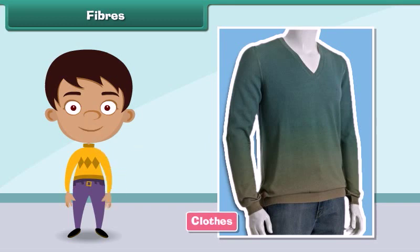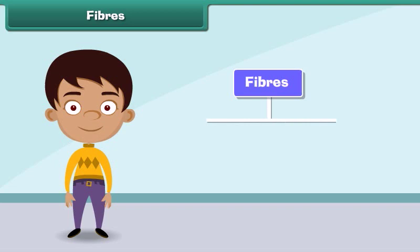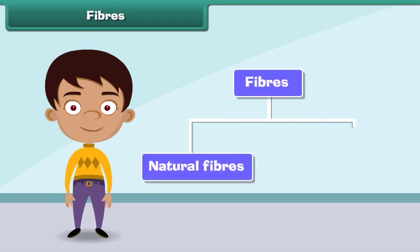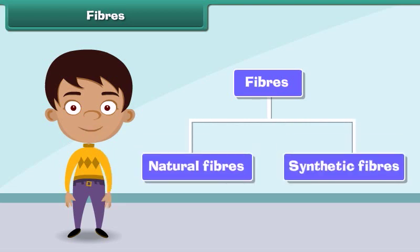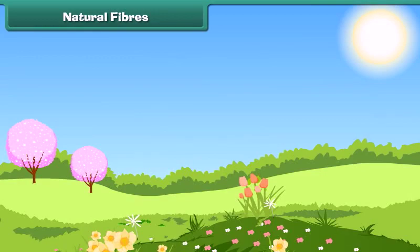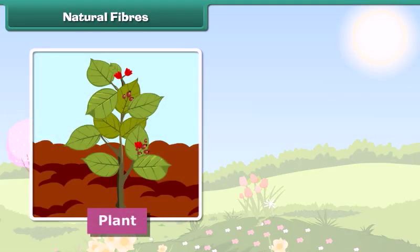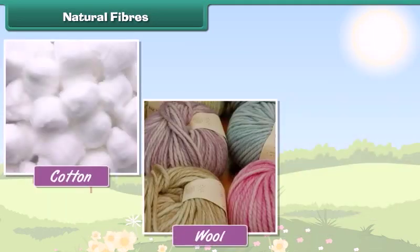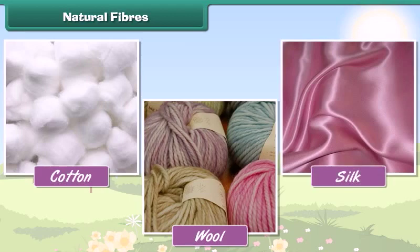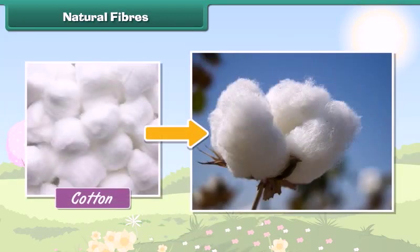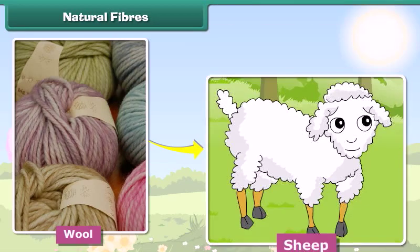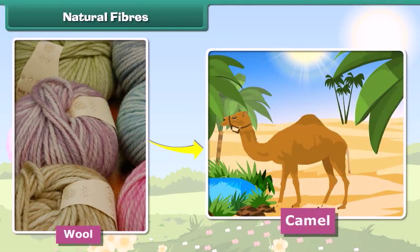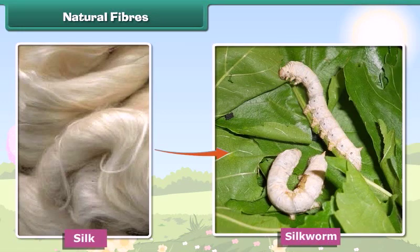Fibers are of two types: natural fibers and synthetic fibers. Natural fibers are made from plants and animals. Some natural fibers are cotton, wool, and silk. Cotton is obtained from plants, wool is obtained from sheep, goats, and camels, and silk is obtained from silk worms.